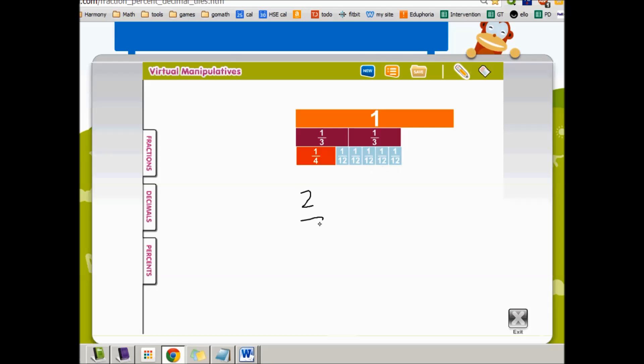So my 2 thirds minus 1 fourth is going to be 1, 2, 3, 4, 5 twelfths. And that's really all there is to it. So let's do a few more.